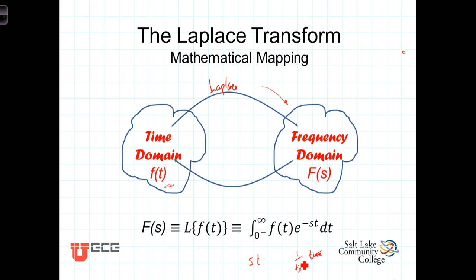Well, the units 1 over time, or per time, are the units of frequency. And so we deduce then that s is a frequency variable in something per time, something per second. And because s is a frequency variable, we then appropriately refer to the Laplace domain as the frequency domain.